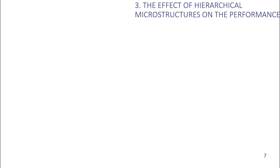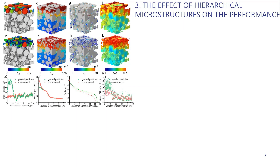In the last part of my presentation, let's explore some hierarchical microstructures and see how they affect rate capability. By using morphological operations based on the original electrodes, we can reduce the particle size in the vicinity of the separator while still maintaining the same volume fraction. This leads to an increased surface area, so we can see that the local mass transfer property is increased, evidenced by the smoother gradient of the electrolyte concentration compared to the original sample.